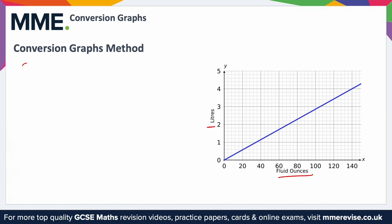For example, if we wanted to convert two and a half litres into fluid ounces, all we would need to do is find two and a half litres on the y-axis in this case, that's here, go across to where that meets the line and then just straight down to where it meets the x-axis.